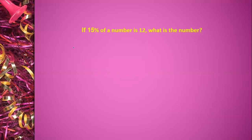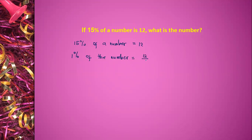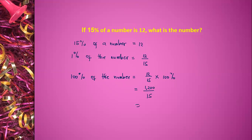Example 2: If 15% of a number is 12, what is the number? So 15% of a number is equal to 12. The 1% of the number is equal to 12 divided by 15. And then 100% of the number is equal to 12 divided by 15 times 100%. So 12 times 100 is equal to 1,200 divided by 15, which is equal to 80.